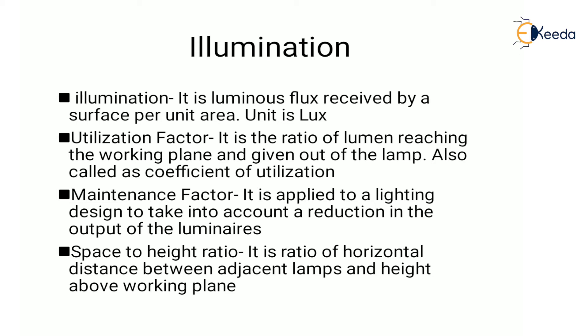The first term is illumination. It is the luminous flux received by a surface per unit area, and its unit is lux. Next is utilization factor. It is the ratio of lumen reaching the working plane — that is, the light reaching the working plane — and the given output of the lamp. It is also called the coefficient of utilization.